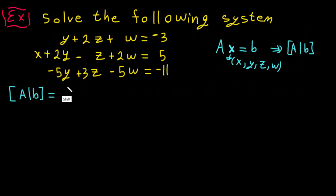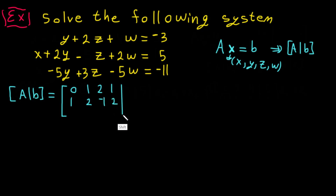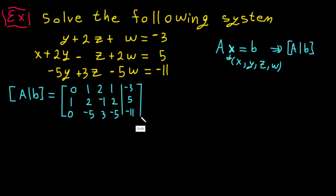We write the augmented matrix. The first row is 0, 1, 2, 1 — because there is no x term — and the second row is 1, 2, -1, 2. Then we add the augmented part: the first entry is -3, 5, and the last row is 0, -5, 3, -5, -11. Then we close the bracket.